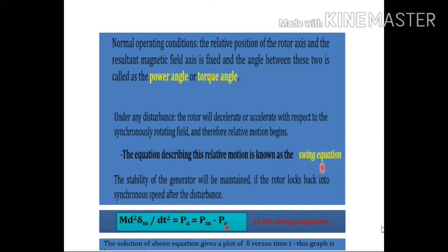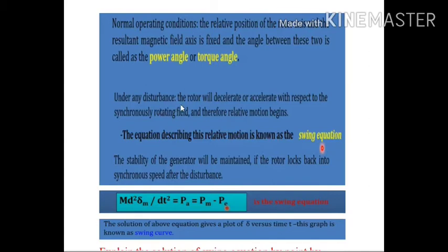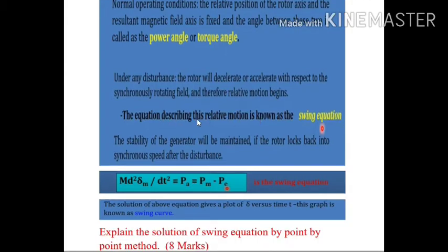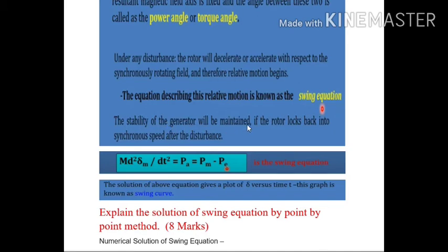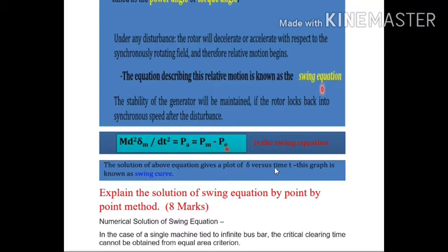Under normal conditions, the relative position of the rotor axis and the resultant magnetic field axis is fixed at a certain angle. Under any disturbance, the rotor will decelerate or accelerate with respect to the synchronously rotating field, and relative motion begins. The equation describing this relative motion is known as the swing equation: M d²δ/dt² = Pa = Pm − Pe. The solution of this equation gives a plot of δ versus time t, known as the swing curve.